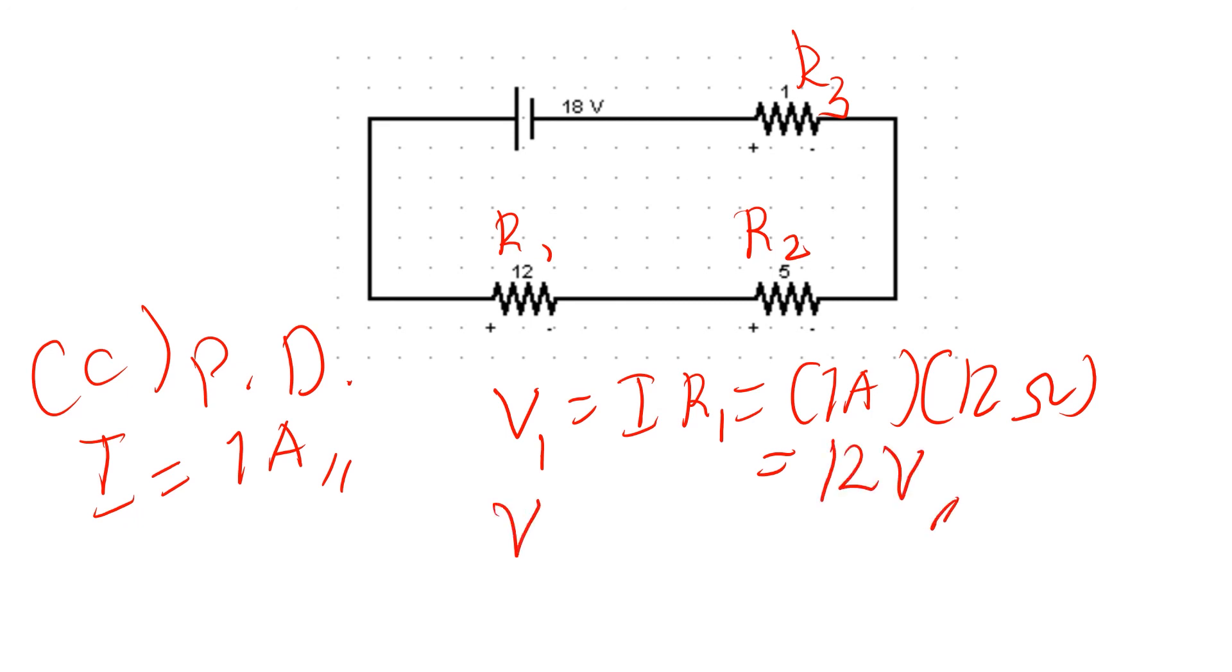Same goes with your R2. I times R2, this is equal to 5 volts. Then for my third resistor, I have I times R3, which is equal to 1 volt.